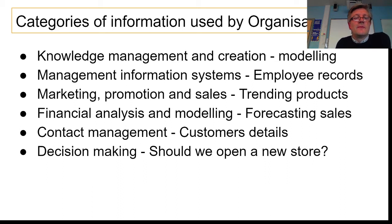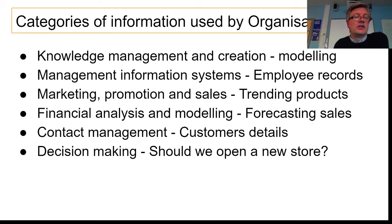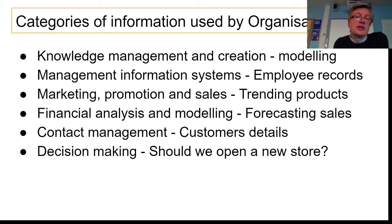Organisations use information to help them make decisions. You can look at how different stores have been doing in different regions, look at what's happening in the country in terms of how much money people are spending, whether anything is affecting the high street, whether online shops are doing better than high street shops. You look at all the information and decide: should we open a new store, expand the website, or close stores down? These decisions are made based on the information the organisation has.